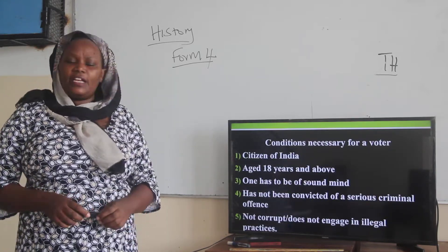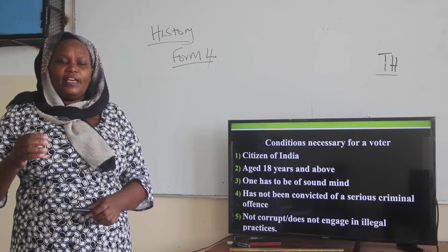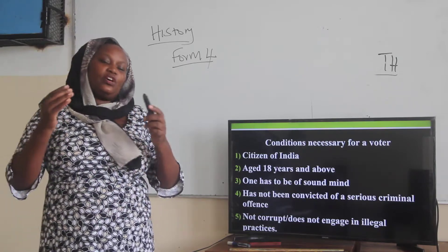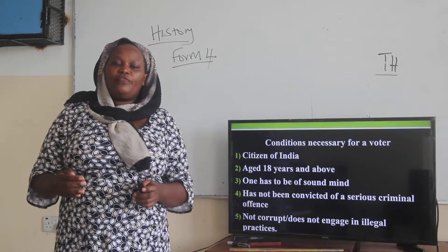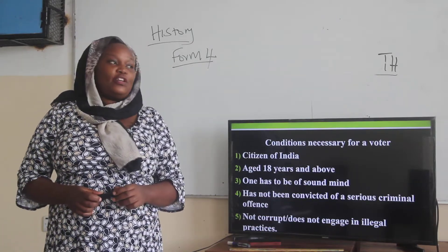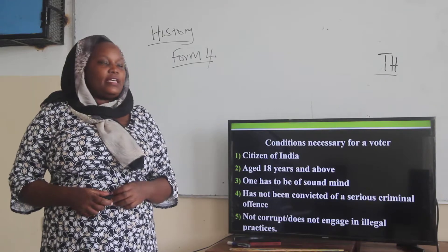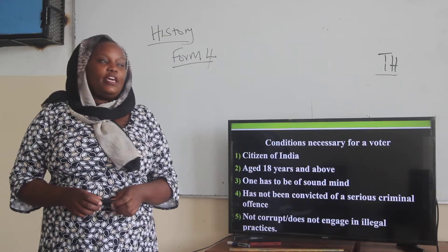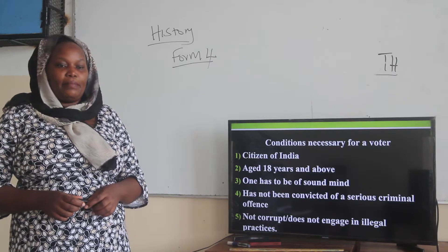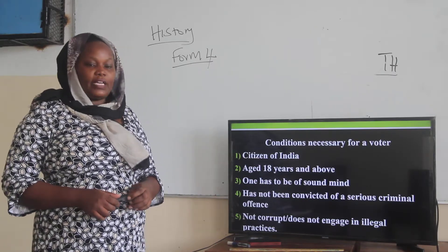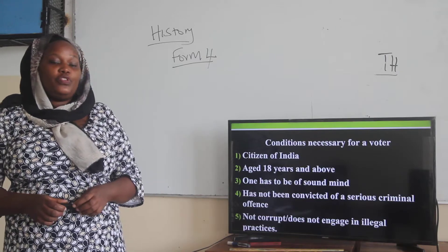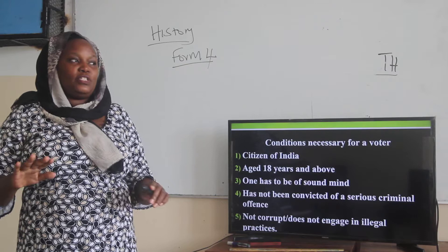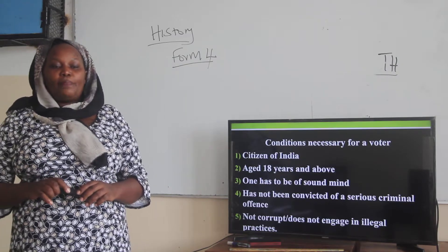What are the conditions necessary for voters? The Electoral Commission determines who is qualified and who is not. For you to qualify to become a voter, you must be a citizen of India — either by birth or by registration. You must also be 18 years of age and above. They use what we call universal suffrage, whereby once you are 18 years, despite your status, you are capable of voting.